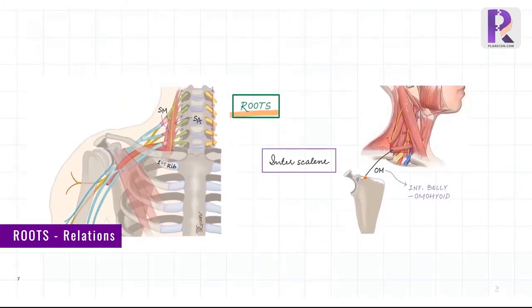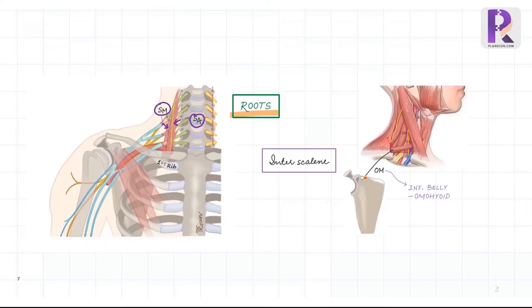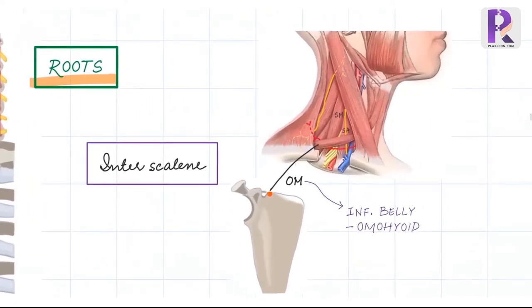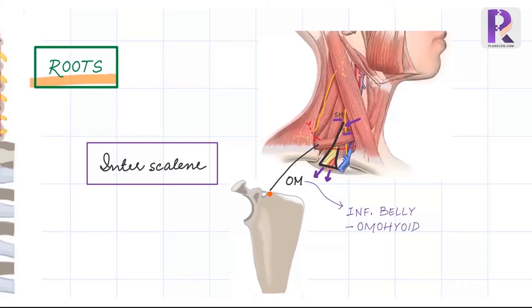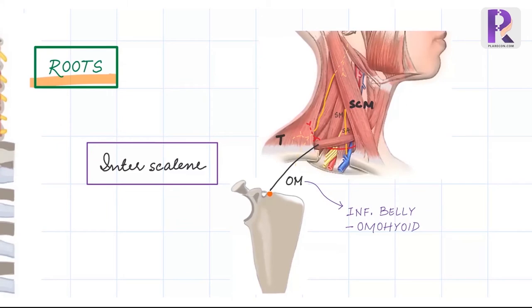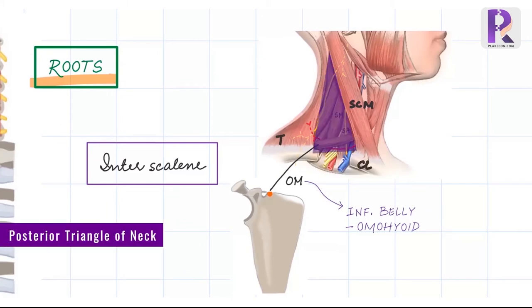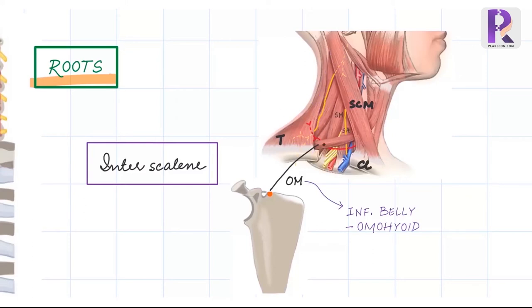Let's begin with the relations of the roots. Anteriorly the scalenus anterior, posteriorly the scalenus medius, and inferiorly the first rib form the interscalene triangle through which the subclavian artery and the phrenic nerve traverse. Here is the scalenus anterior and the scalenus medius; in between is the interscalene triangle through which pass the roots of the brachial plexus, the subclavian artery inferiorly and the phrenic nerve superiorly. In this triangle, the interscalene block is given mainly to the upper roots of the brachial plexus.